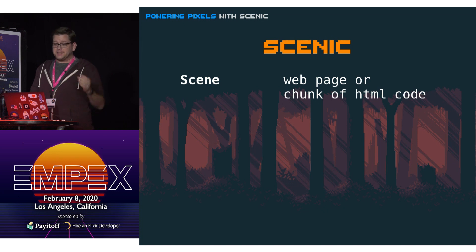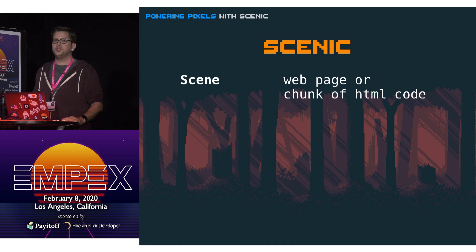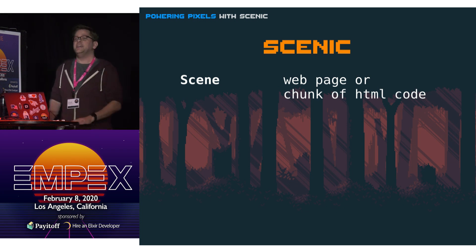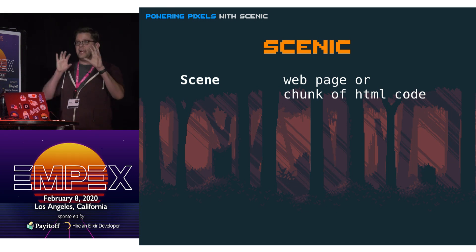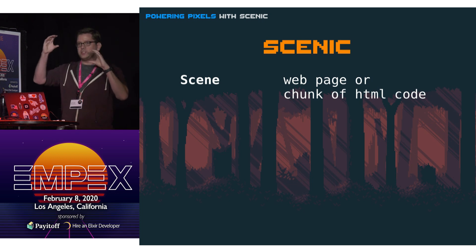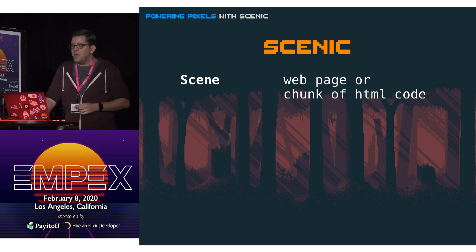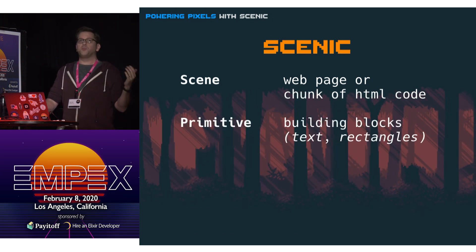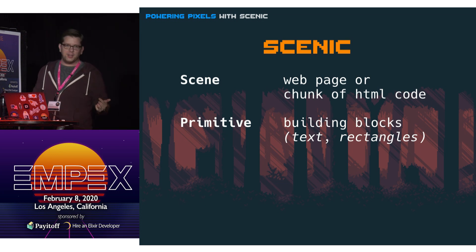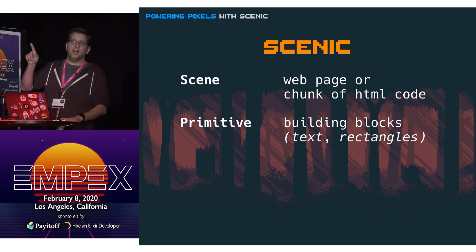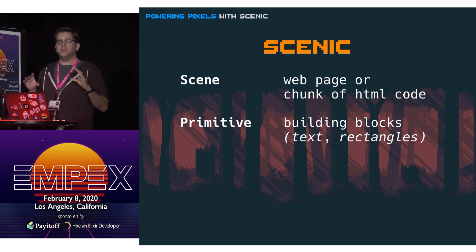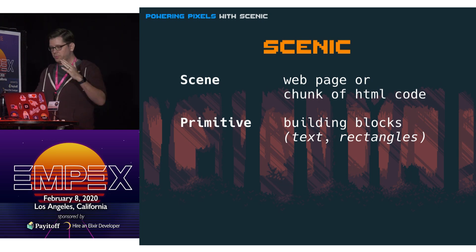The scene is kind of like building a web page, or more like a chunk of HTML code, because usually in Scenic you have multiple scenes stacked on top of each other — different chunks of display code. You might have a menu over here and a sidebar over there. In each of those scenes you're using primitives to build it: text, rectangle, lines, circles, triangles — all those different pieces are primitives you use as building blocks to build up your display.